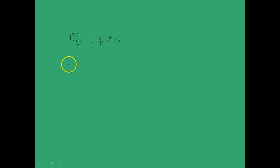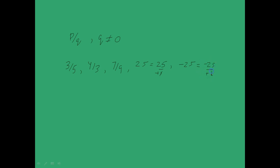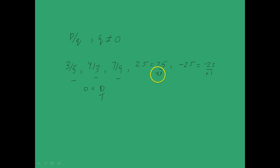To give you an example of what constitutes a rational number: 3 by 5, 4 by 3, 7 by 9. Also keep in mind that numbers like 25 are rational numbers. Why? Because 25 can be written as 25 by 1. And minus 25 is also a rational number because it can be written as minus 25 by 1. And if you consider 0, that can be written as 0 by 1. Therefore, all fractions and the set of integers together constitute what we call rational numbers.